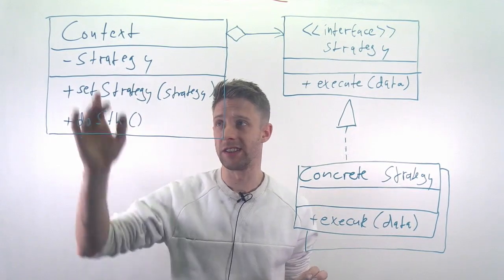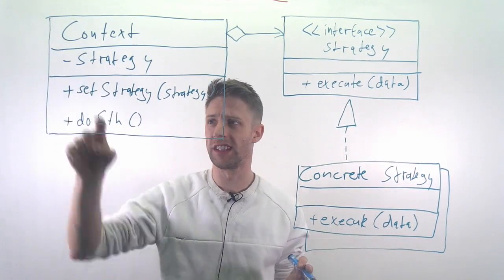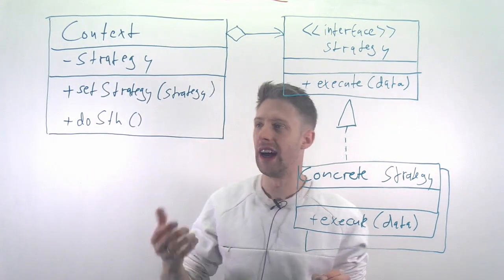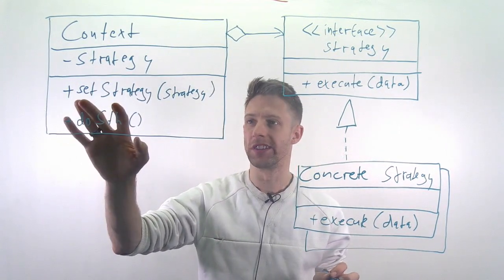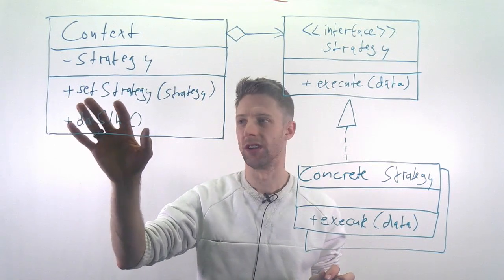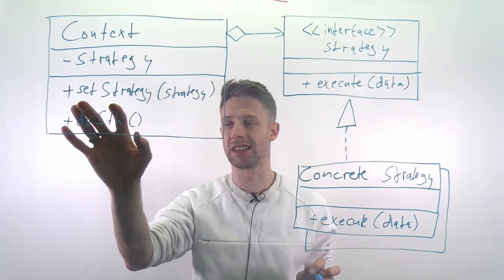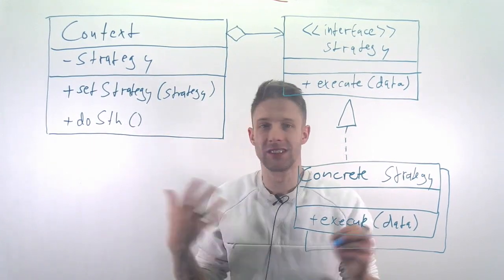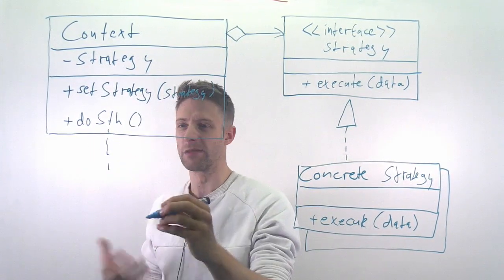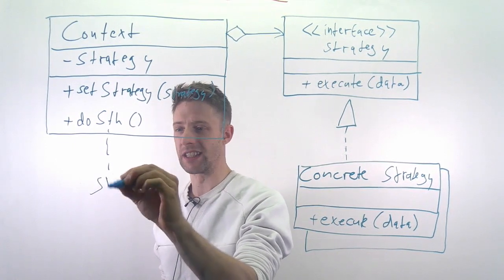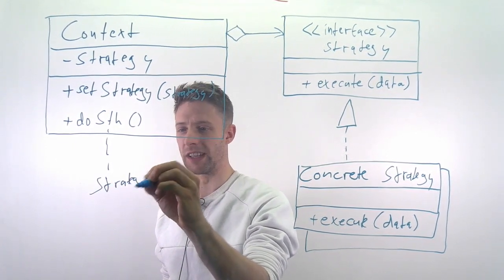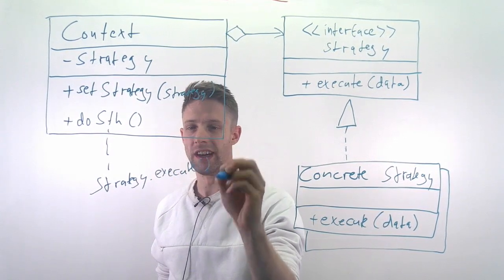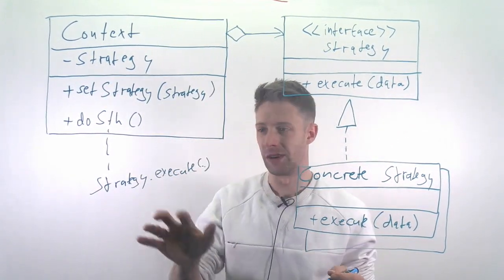The way this works is you have the context, so that's our application for instance. This application has a strategy, some kind of algorithm, some filter and it has methods to set this strategy. It has a set method where you provide a strategy and then there is some kind of method that does something and the assumption here is simply that this method is what is actually executing. You have something like strategy.execute. Somewhere in there we are executing our algorithm.